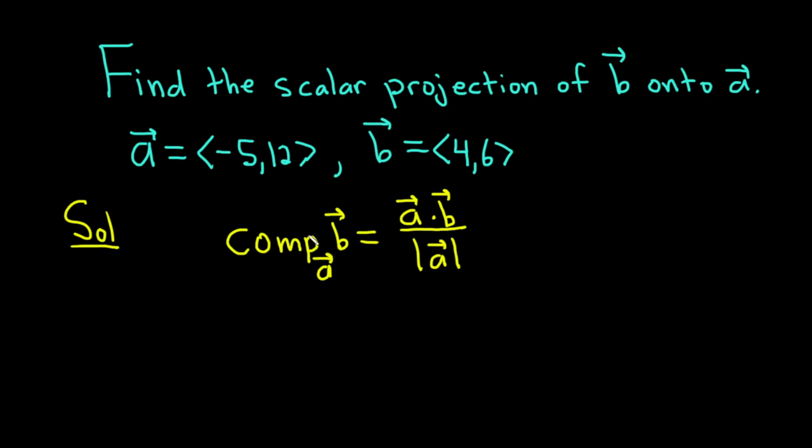So again, this is the scalar projection of B onto A, or the component of B along A, and it equals A dot B over the magnitude of A.